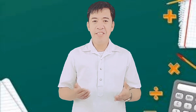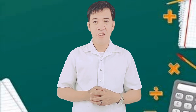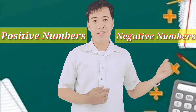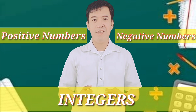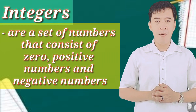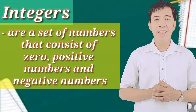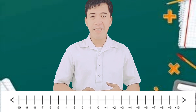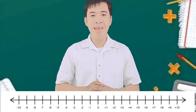If words and actions have opposites, numbers also have opposites. There are positive numbers and negative numbers. These numbers are called integers. Integers are a set of numbers that consist of zero, positive numbers, and negative numbers. Integers can be presented on a number line. The number line extends in both directions infinitely, as indicated by arrows.